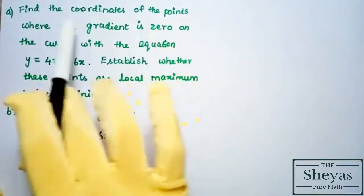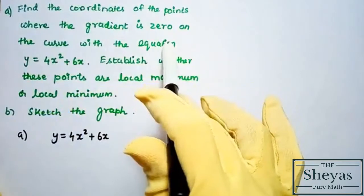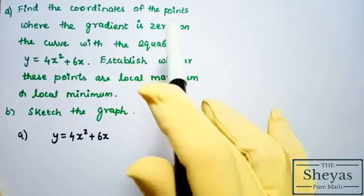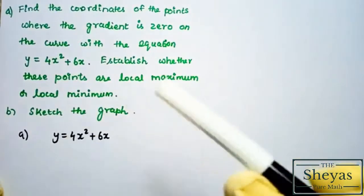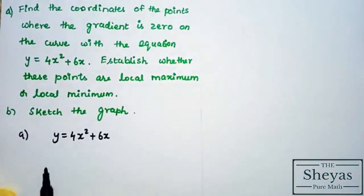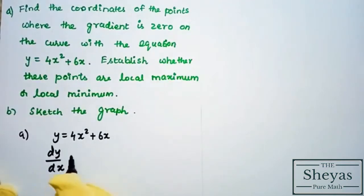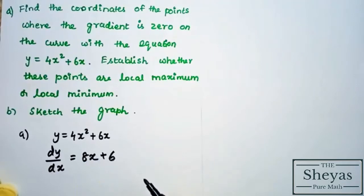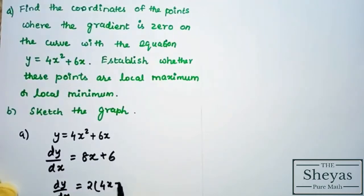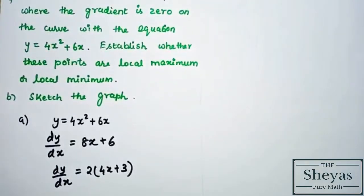The first step is to find the coordinates where the gradient is 0. The gradient means dy/dx, so you have to differentiate. For y = 4x² + 6x, therefore dy/dx = 8x + 6. Taking 2 outside, we get dy/dx = 2(4x + 3).